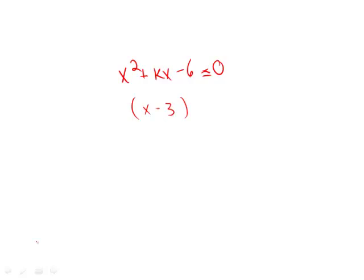x minus 3, in parentheses, because we're dealing with the FOIL method, equals 0. So what this means is x would equal 3. This is what we call the root.